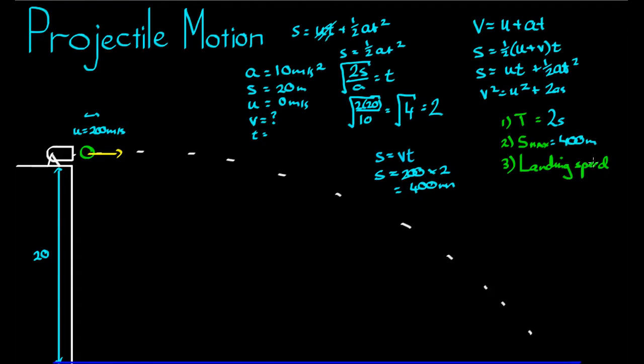The third part of this question, finding the landing speed. Let's draw that cannonball again, right before it strikes the ground. Horizontal velocity does not change under the effects of gravity, so it's still 200. And we also said it has some vertical velocity there. I'm actually going to move this up, in case it starts going off the screen.